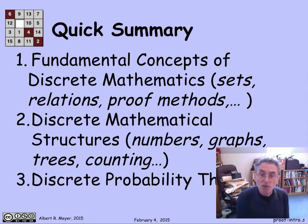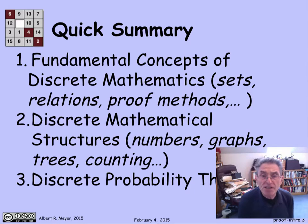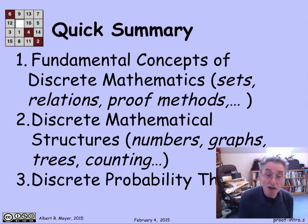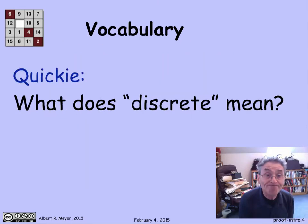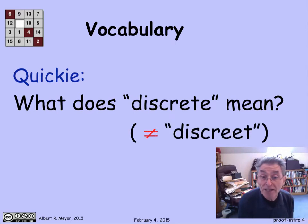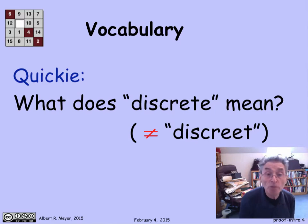Finally, we'll talk about discrete probability theory, which is simply a version of probability theory where we can get by with sums instead of the complications of integrals. Here's a quick vocabulary check: do you know what 'discrete' means? It doesn't mean 'discreet.' If you don't know, this is a good moment to stop the video and look it up.